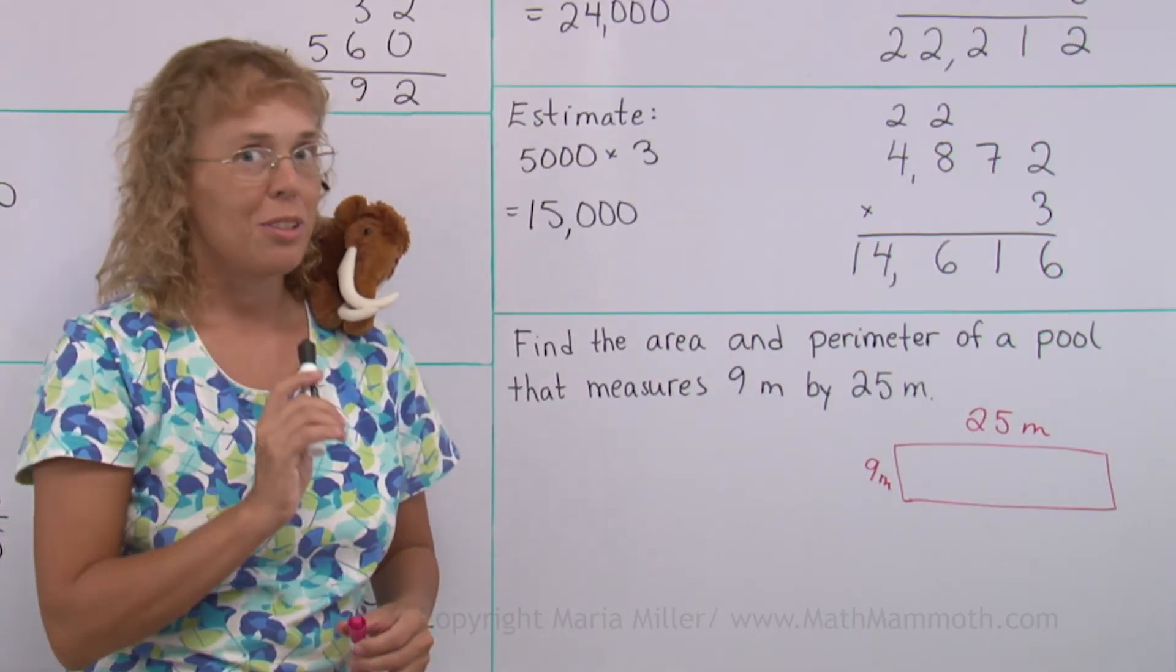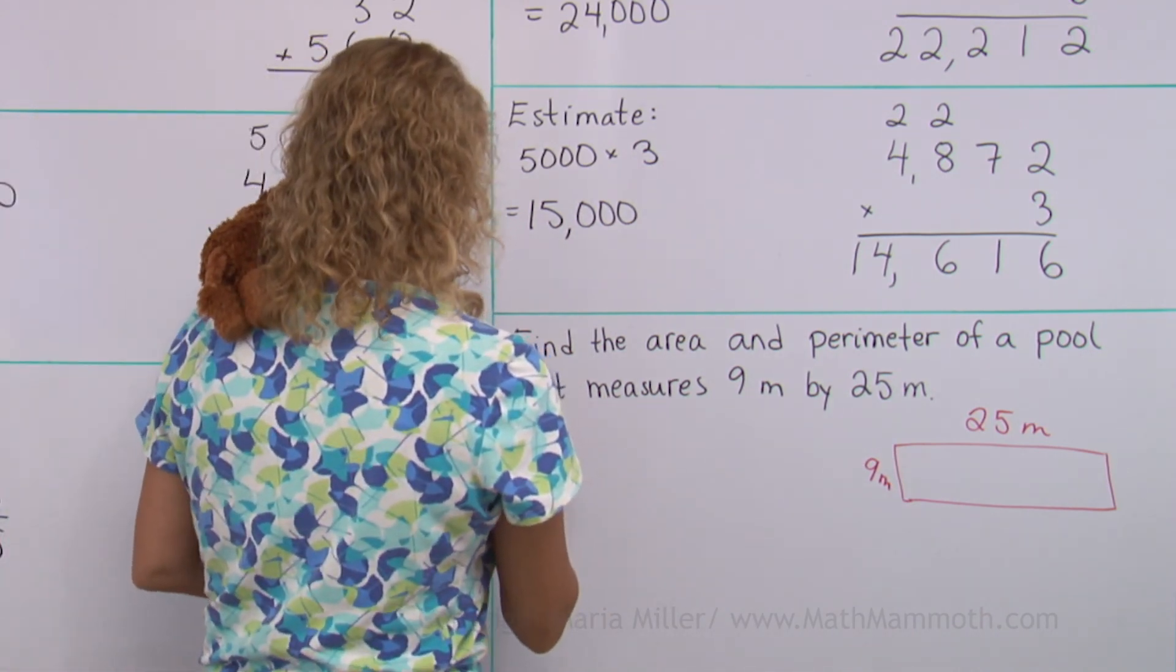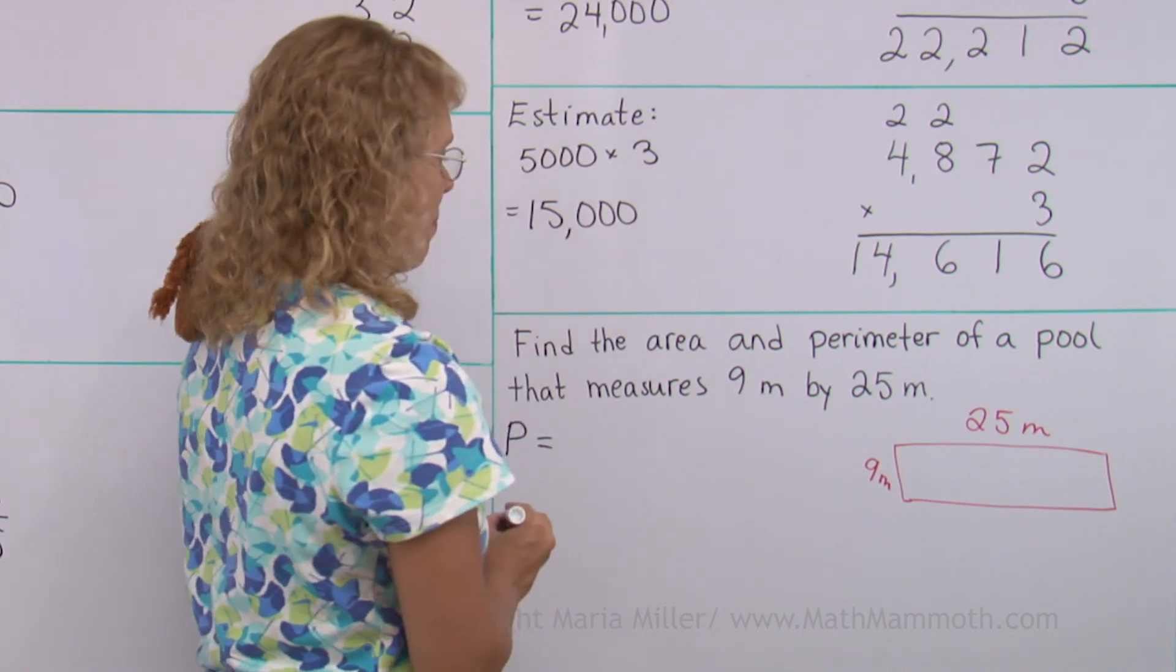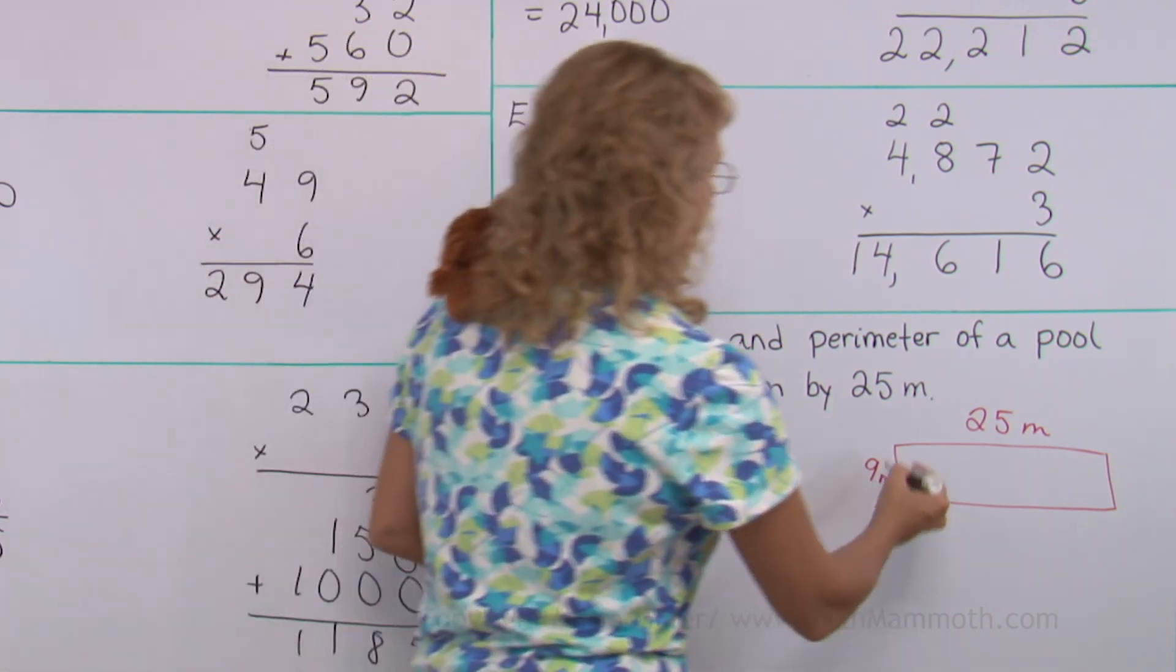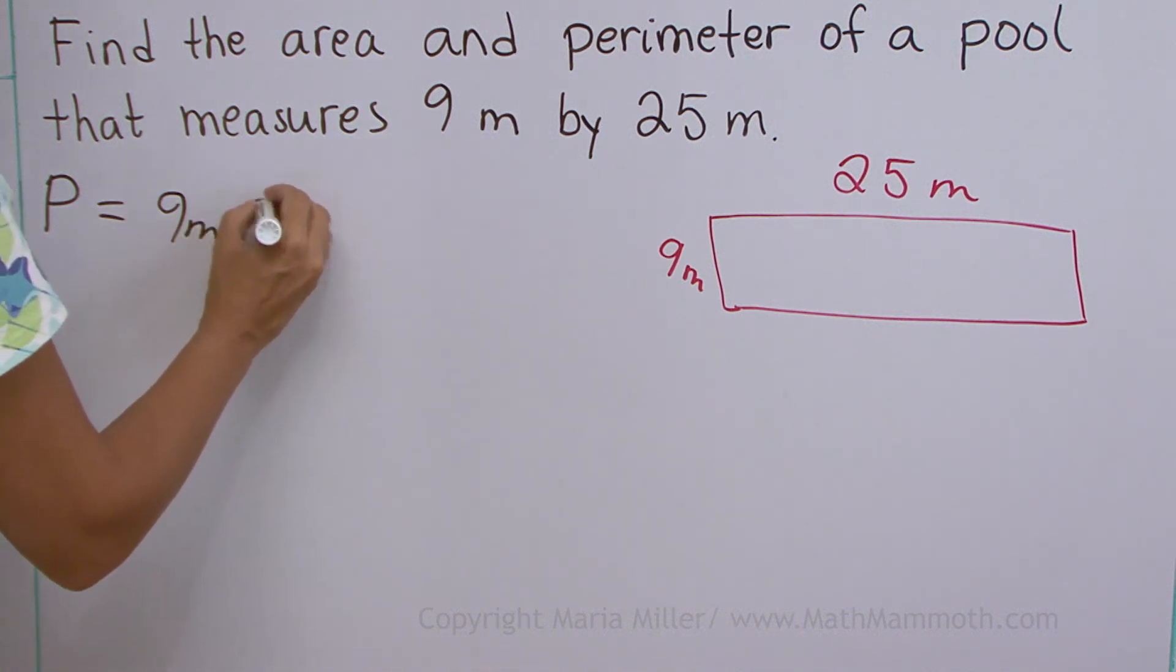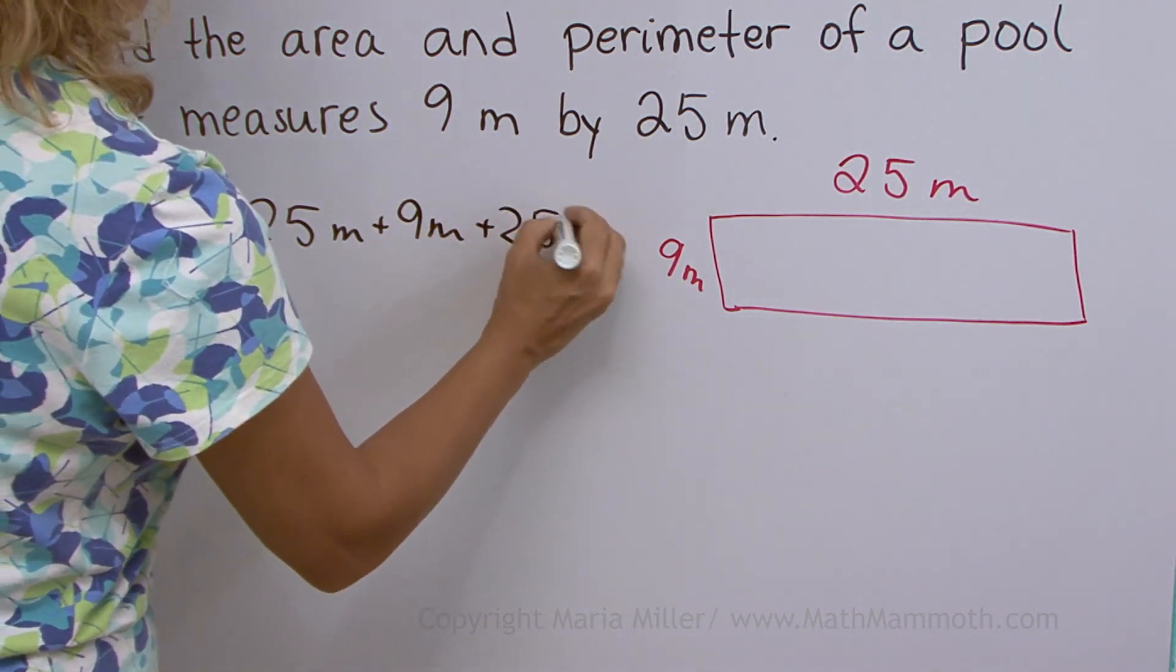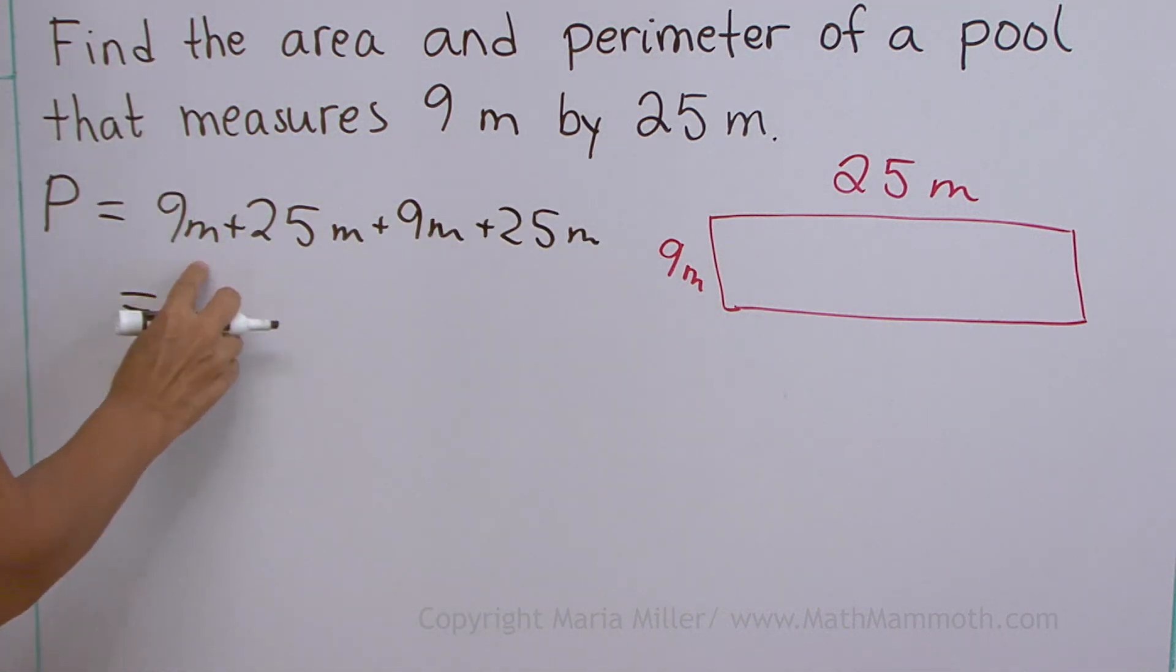So let's draw here a rectangle that would be 9 meters by 25 meters. Then the perimeter first. How did you do that? How did you calculate the perimeter? P is perimeter. You go all the way around the figure and add. So we would have 9 meters plus 25 meters plus 9 meters plus 25 meters. 9 and 25 is 34. Double that, 68 meters.